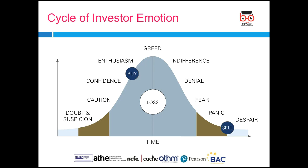In the previous session we saw the different phases of human behavior in investment. This graph also basically pictures the cycle of investor emotions. The initial phases are characterized by doubt and suspicion, then caution, and then they have the confidence to buy the stock, which turns to enthusiasm and greed over a period of time. But as the stock falls, investors enter into the phase of denial, and then fear, panic, and despair.